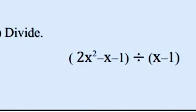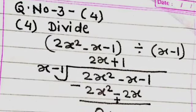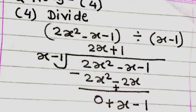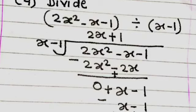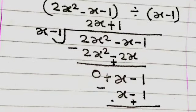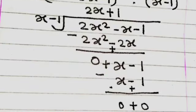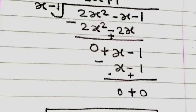Next question: divide 2x squared minus x minus 1 by x minus 1. We solve this by the long division method. First, divide 2x squared by x to get 2x. Then 2x into (x minus 1) is 2x squared minus 2x. After subtracting, the remainder is x. Bringing down minus 1 gives x minus 1. Dividing x minus 1 by (x minus 1) gives 1. So x minus 1 minus (x minus 1) equals 0. The answer of this division is 2x plus 1.